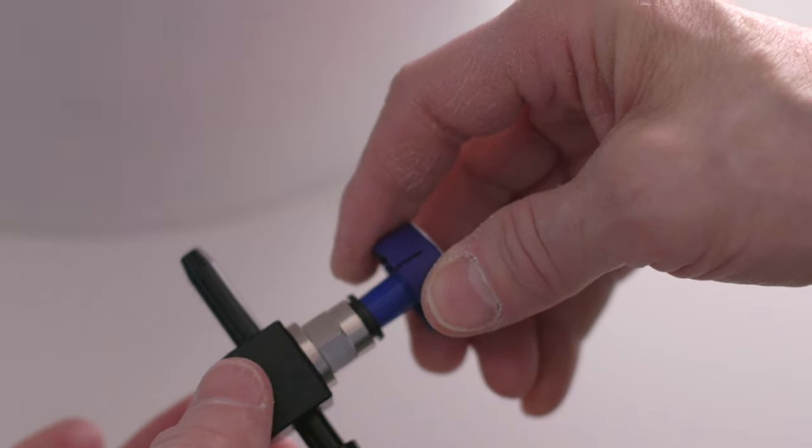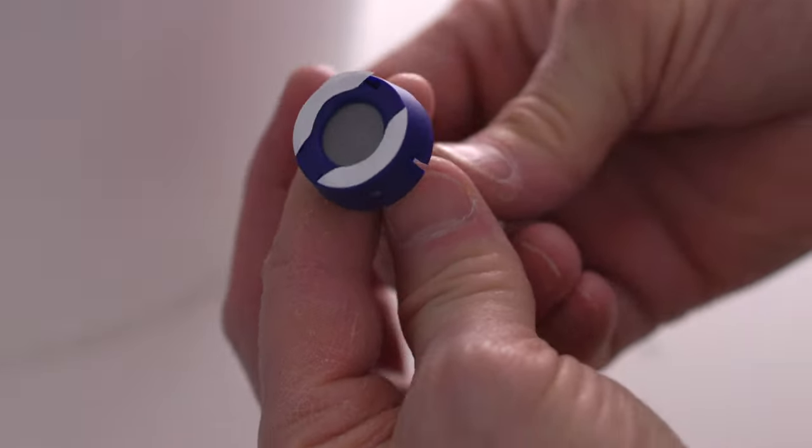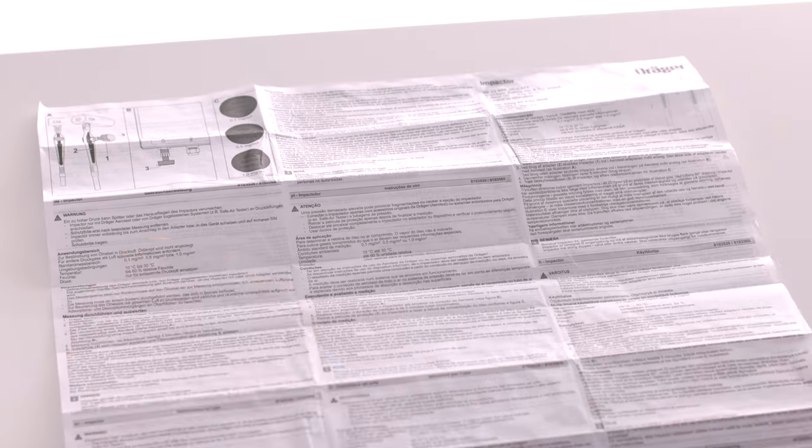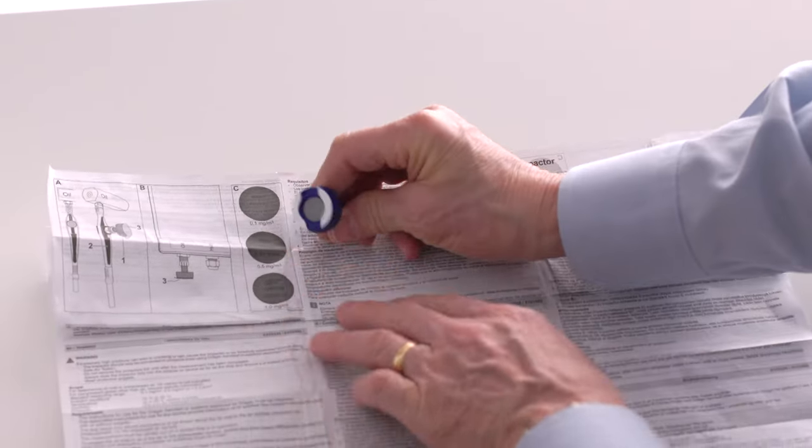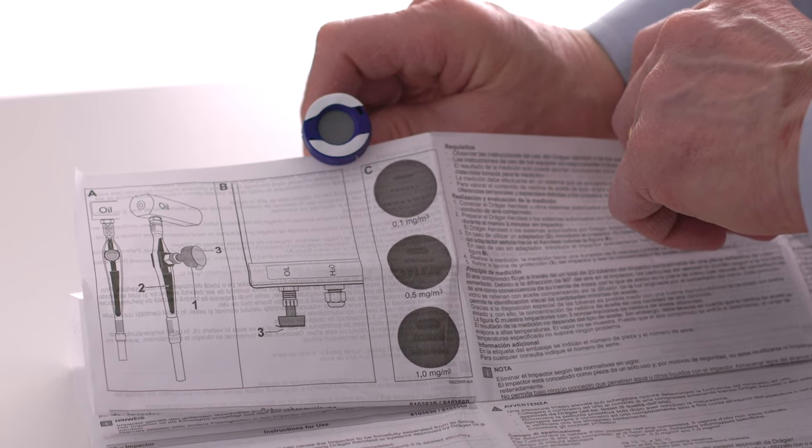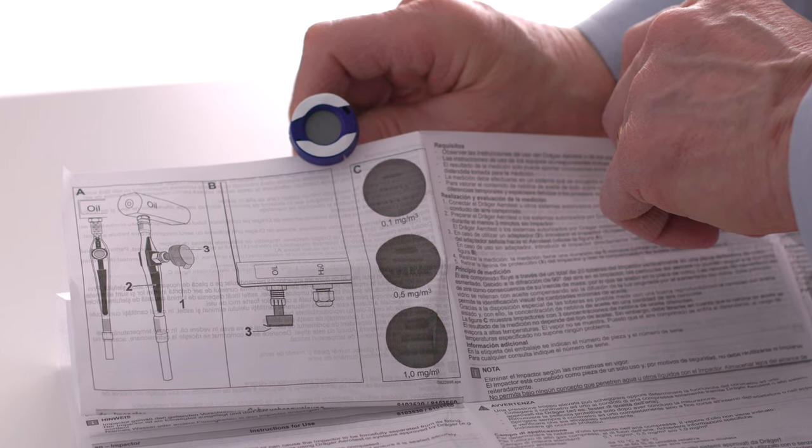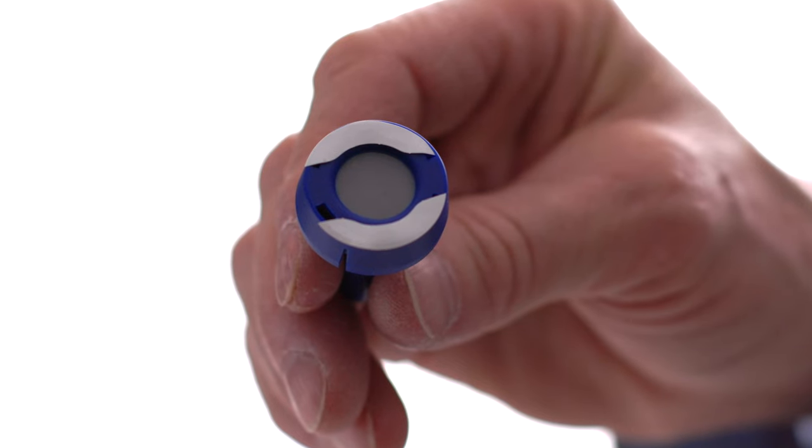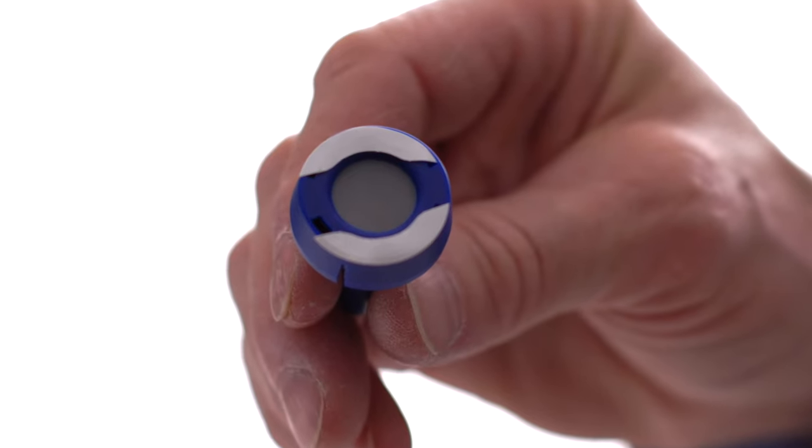Press down on the black ring of the adapter to release the impactor. Remove the tear-off cover with the Draeger logo to show the indication surface. Compare the pattern on the impactor with the three reference standards in the IFU. The images are at 0.1, 0.5, and 1.0 milligrams of oil per cubic meter. This one shows no visible pattern, so the amount of oil is below the detection limit of the oil impactor.